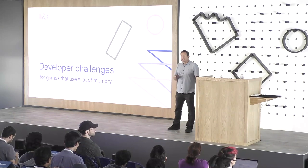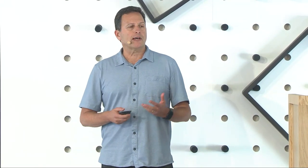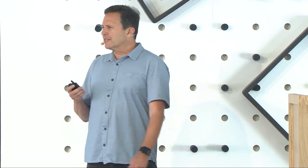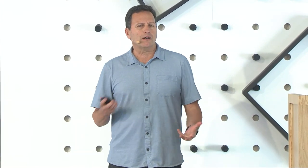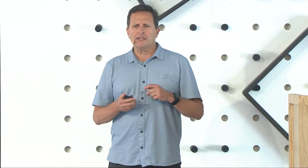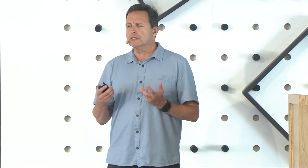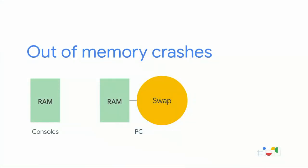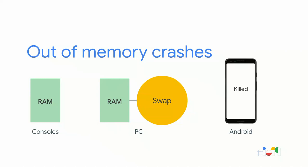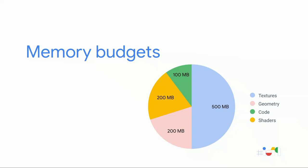What are some of the problems that developers face with memory? The biggest problem is running out of memory and having your game just crash. Android is different than other platforms. With consoles, you have a fixed amount of memory, so it's much easier to predict how much memory to budget for. With PC, you have a lot of swap space, so memory can be swapped to disk. However, with Android, when it runs low on memory, about the only thing that can happen is your game gets killed — so you want to avoid that situation.